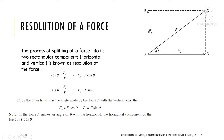Similarly, for Fy: in the rectangle, the opposite side BA is similar to CD. Opposite over hypotenuse is sin theta, so sin theta equals Fy divided by F. Cross-multiplying gives Fy = F sin theta. To summarize: the horizontal component of a force equals F cos theta, and the vertical component equals F sin theta. Note that theta must be taken from the horizontal axis.